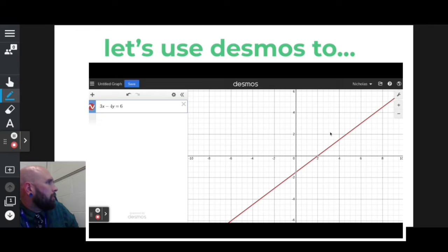Now, the x-intercept is where this line crosses the x-axis. So the x-intercept, in this case, is the point (2, 0), or just 2.